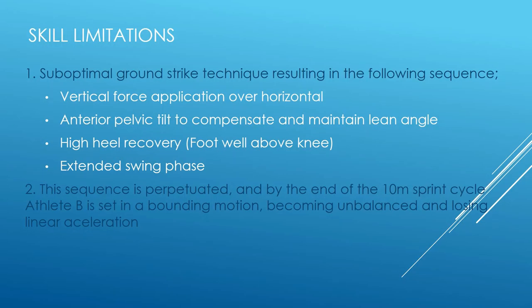Athlete B demonstrates a suboptimal ground strike technique resulting in the following sequence: an undesirable ratio between vertical and horizontal force application, leading to anterior pelvic tilt as the athlete tries to compensate and maintain lean angle. A high heel recovery follows, with the heel significantly higher than the knee, leading to an extended swing phase. This sequence is perpetuated and by the end of the 10m sprint, Athlete B is set in a bounding-like motion, becoming unbalanced and losing linear acceleration.